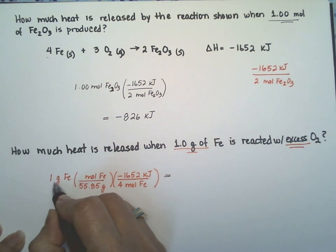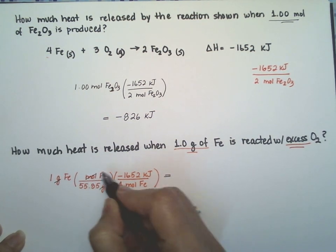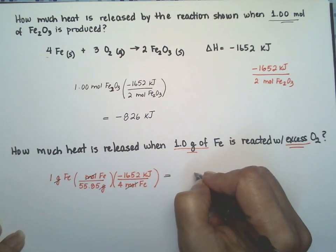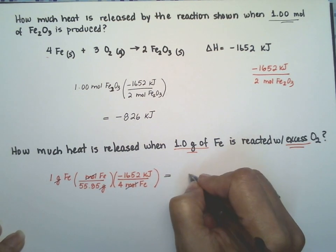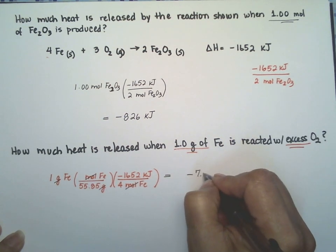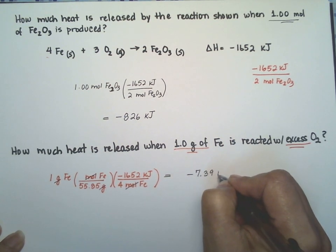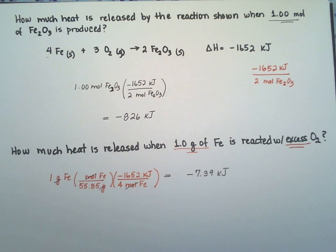My grams cancel, my moles cancel, and one gram of iron is going to release 7.39 kilojoules of heat.